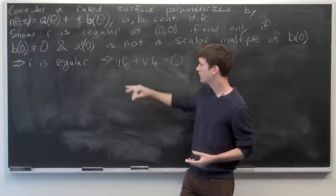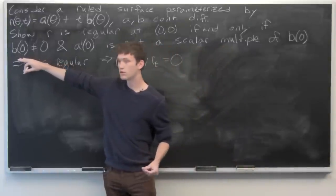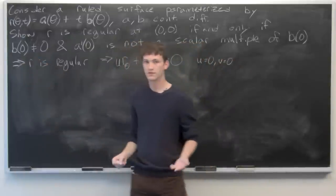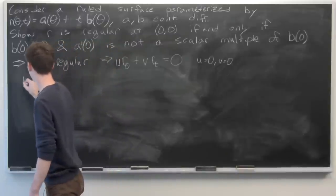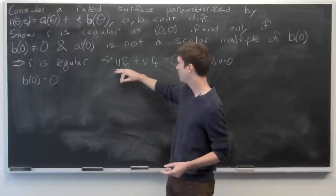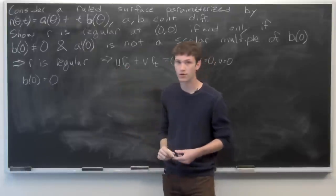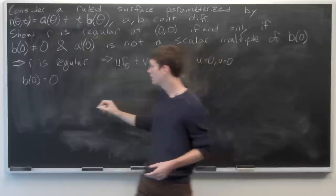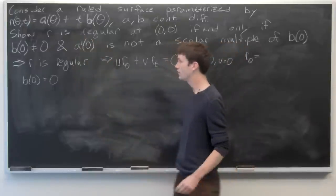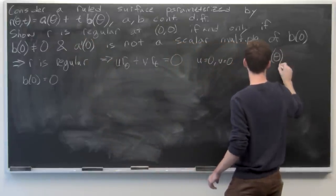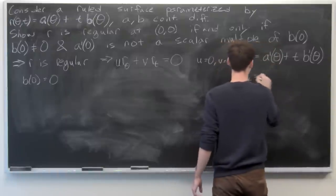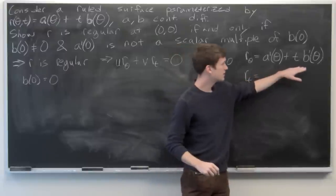So u and v equal zero are the only solutions to this equation. We want to prove that b(0) ≠ 0, so we'll suppose to the contrary that b(0) = 0 and see what happens. Let's first calculate what the partial derivatives of r with respect to θ and t are.